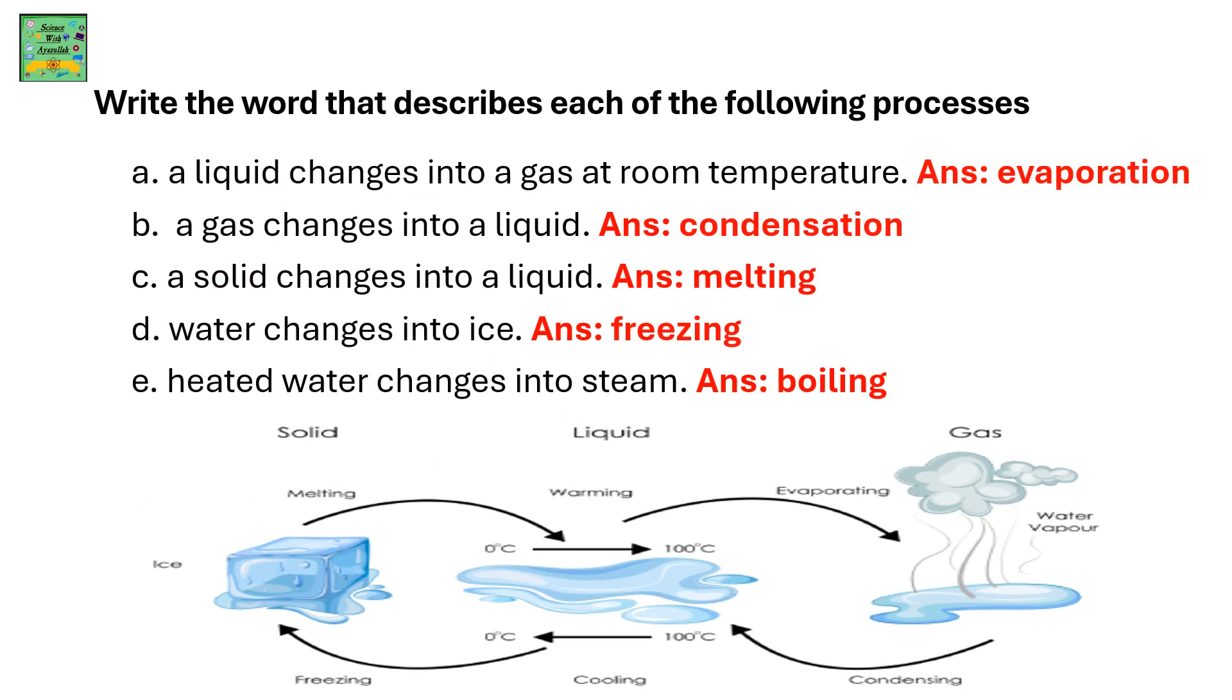Write the word that describes each of the following processes. A liquid changes into a gas at room temperature - it's evaporation. A gas changes into a liquid - condensation. A solid changes into liquid - melting. Water changes into ice - it's freezing. Heated water changes into steam - and it's boiling.